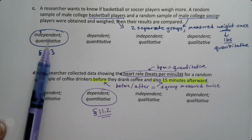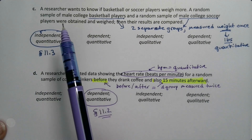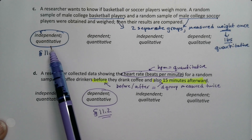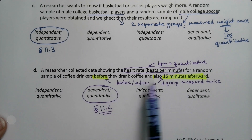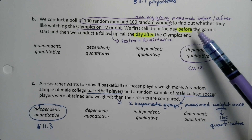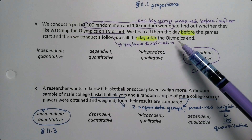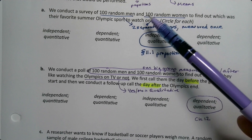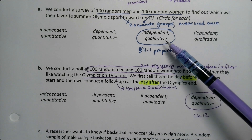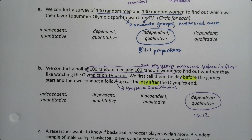The way the problem is set up will dictate what type of thing you're able to do. If it's independent and quantitative, you're going to be in section 11.3. If it's before and after, you're going to be in section 11.2. The dependent qualitative case is chapter 12, and we're not covering that right now. And if it's a qualitative thing — proportions — it's going to be section 11.1, because we'll be doing independent qualitative items.